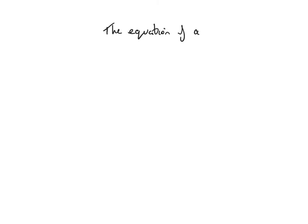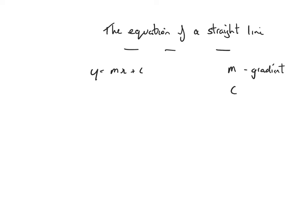We're going to start by looking at the equation of a straight line — that's the title for the lesson. The equation of a straight line is y equals mx plus c, where m is the gradient of the straight line, that's the steepness, and c is the y-intercept, that's where it cuts the y-axis. So we're going to look at some simple problems with regards to this.